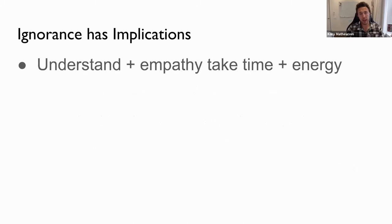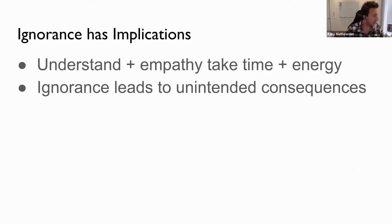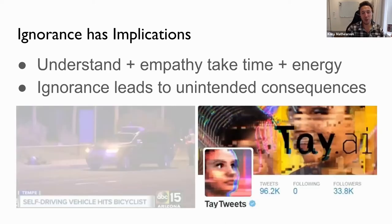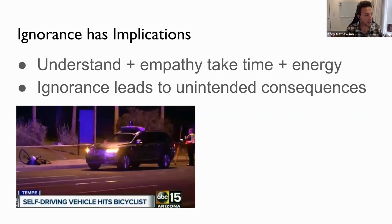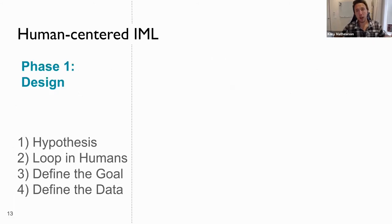Responsible ML requires human understanding and empathy throughout the whole learning loop. Ignorance has its implications — understanding and empathy takes time and energy, and ignorance leads to unintended consequences. Examples include self-driving cars that started operating on roads before they were ready, leading to tragic accidents or collisions, and Tay — a Twitter bot that turned malicious fast and didn't have safeguards in place soon enough.